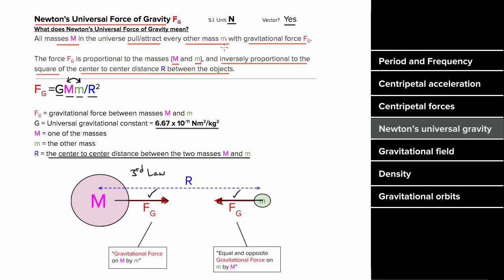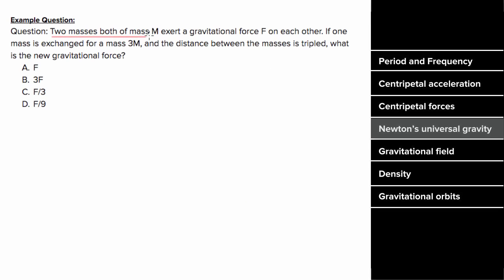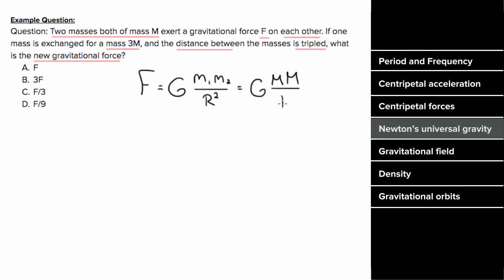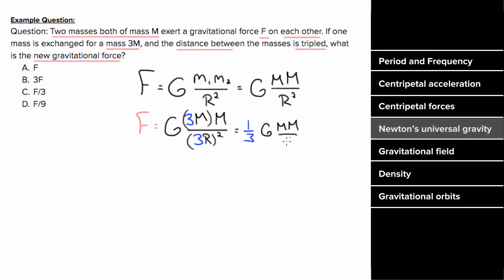Let's say two masses, both of mass m, exert a gravitational force f on each other. If one mass is exchanged for 3m and the center-to-center distance is tripled, what is the new gravitational force? The initial force is G m² / r². The new force is G × 3m × m / (3r)², giving a factor of three over nine, which is one third. So the new gravitational force is one third of f.